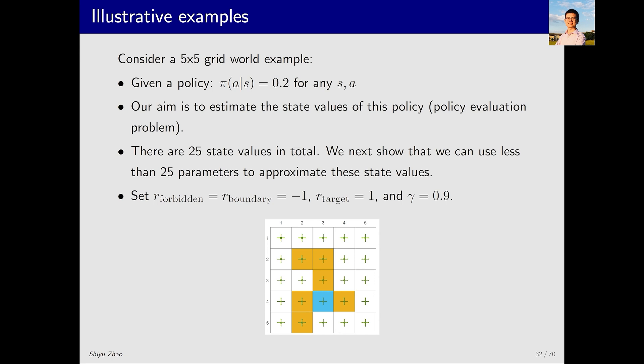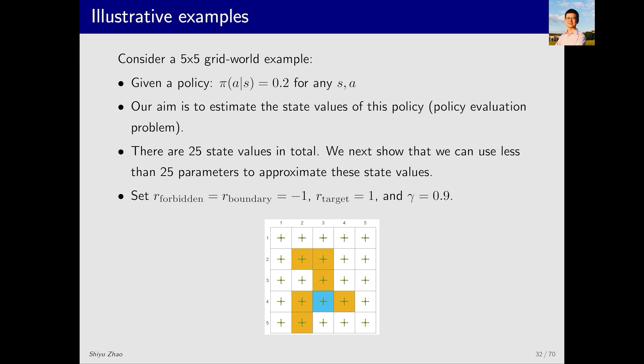These are some parameters for this example. Let's first take a look at the ground truth of the state values. The ground truth can be obtained by solving the Bellman equation. Then we can use the tdLinear method to compare and see if it can accurately estimate the state values.